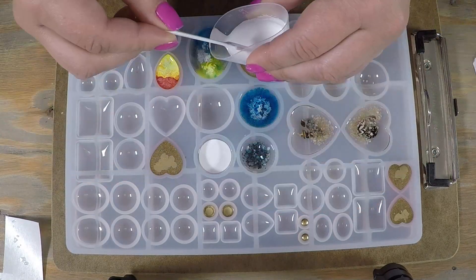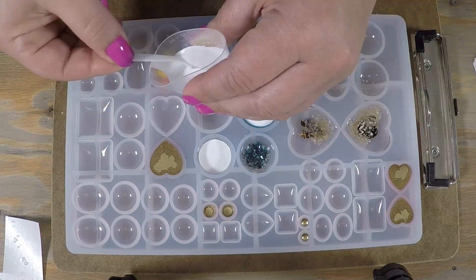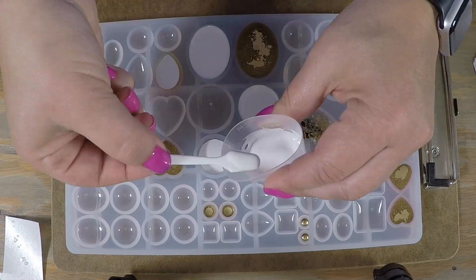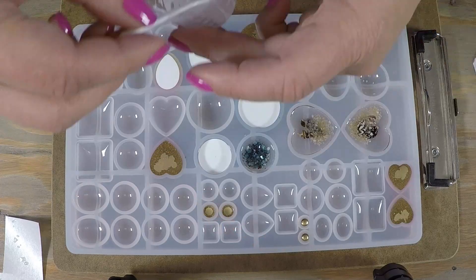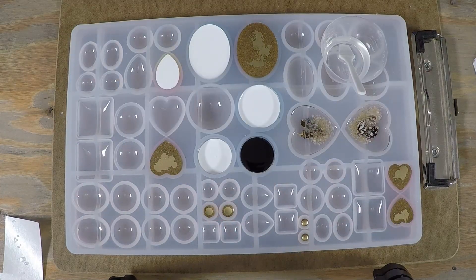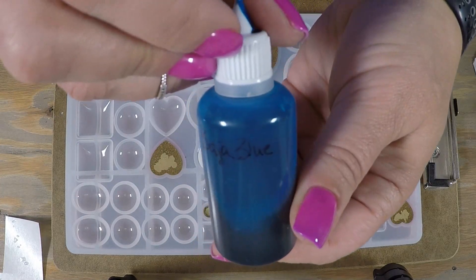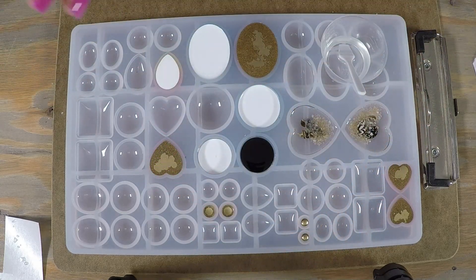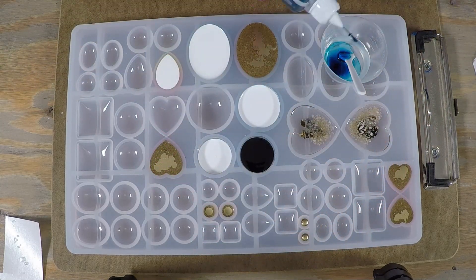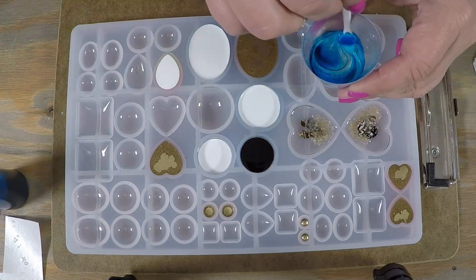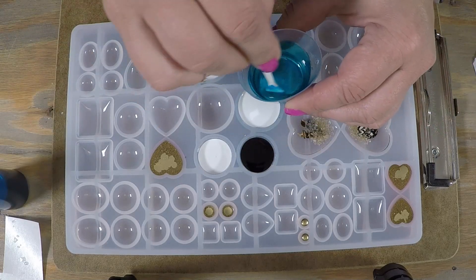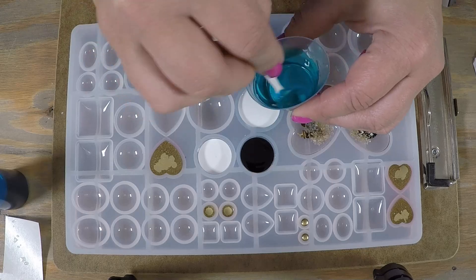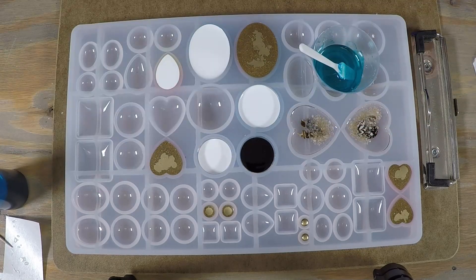With some of the extra, I'm just gonna fill some of the empty cavities and have some random little pieces for later. I'm gonna do the same with the white and fill in some of these on the back. Then I'm gonna go in with the black on one.